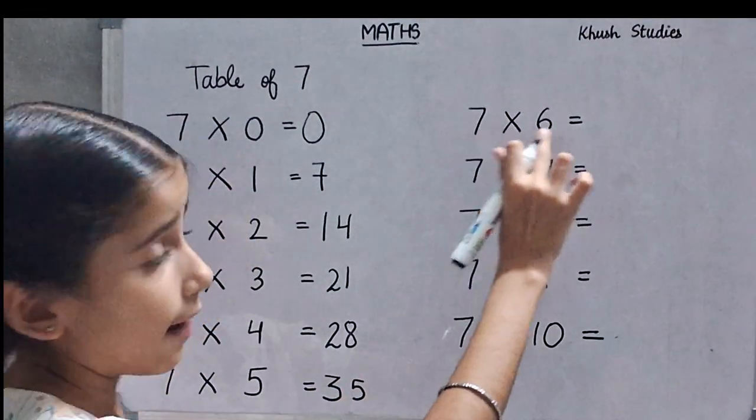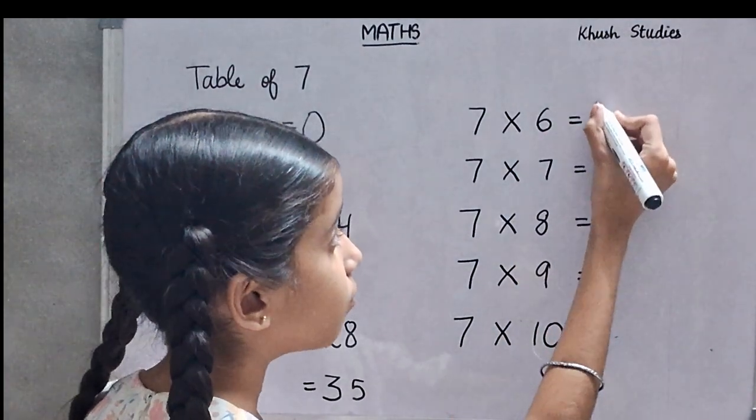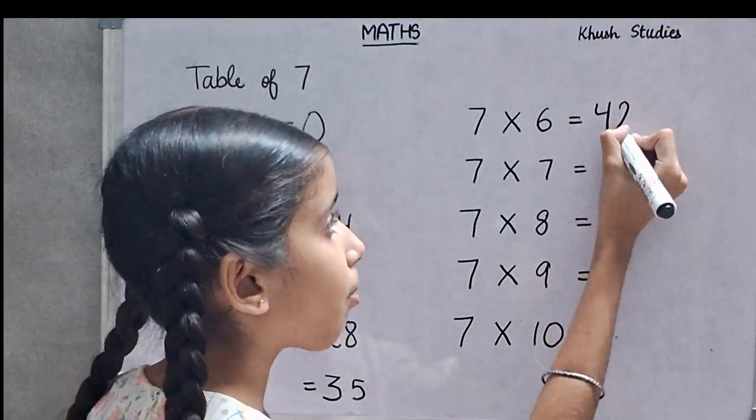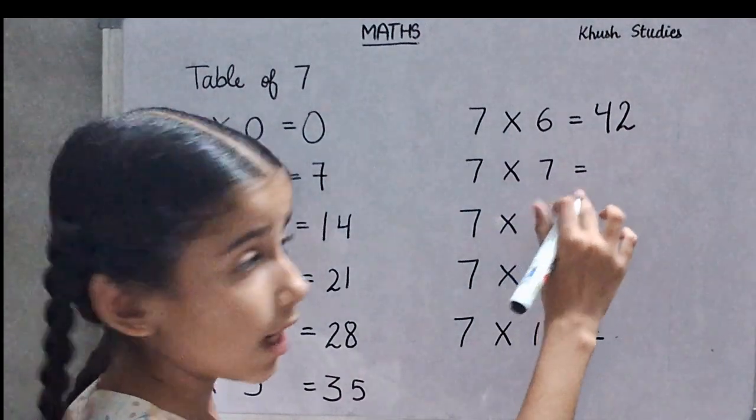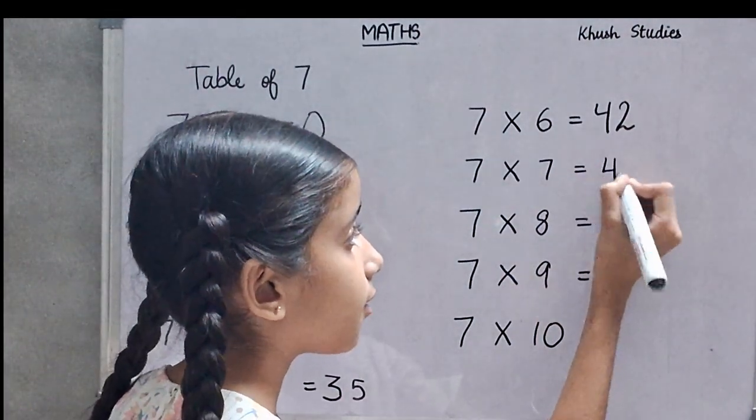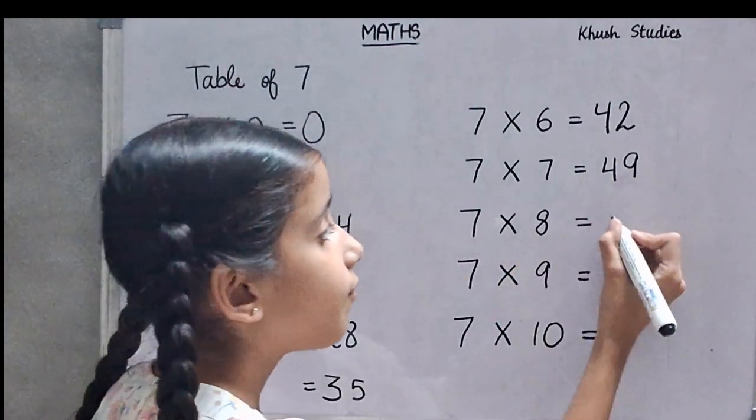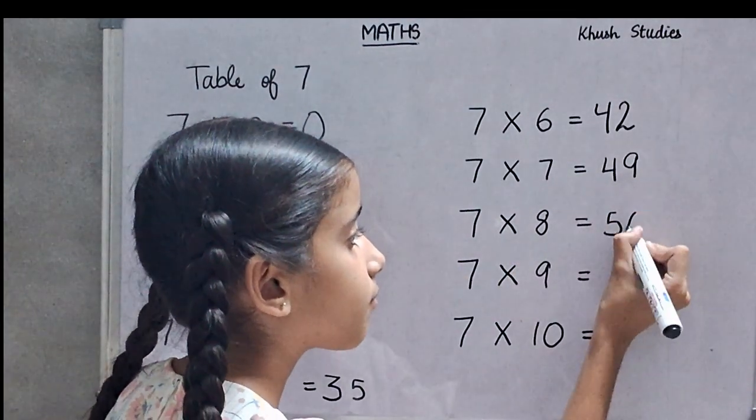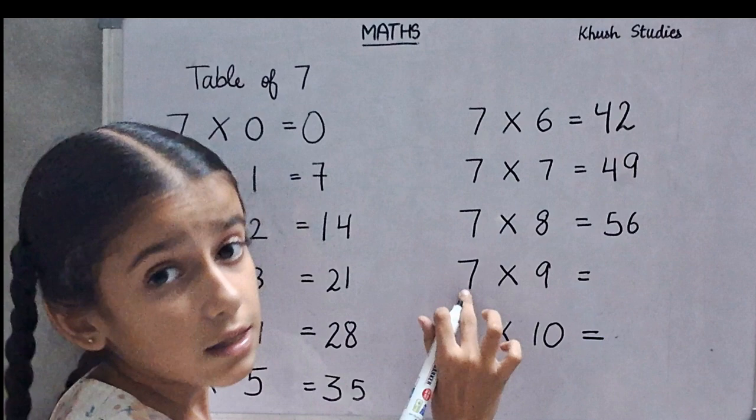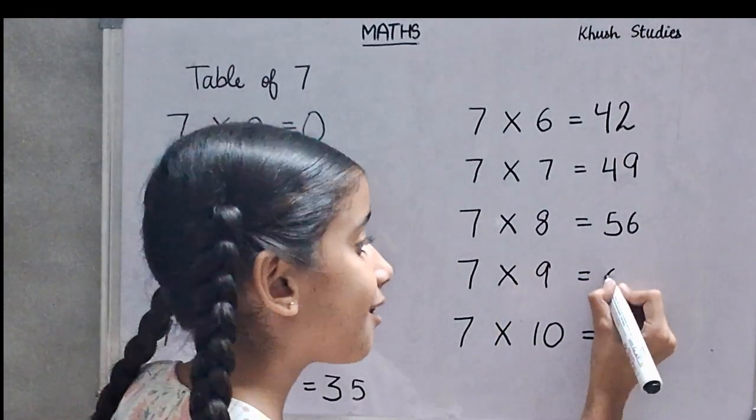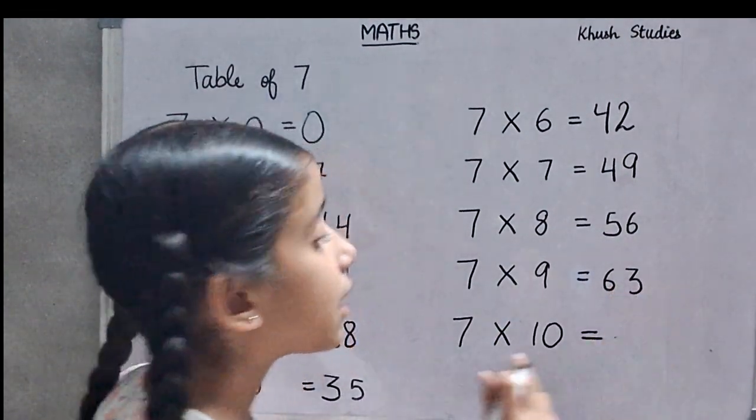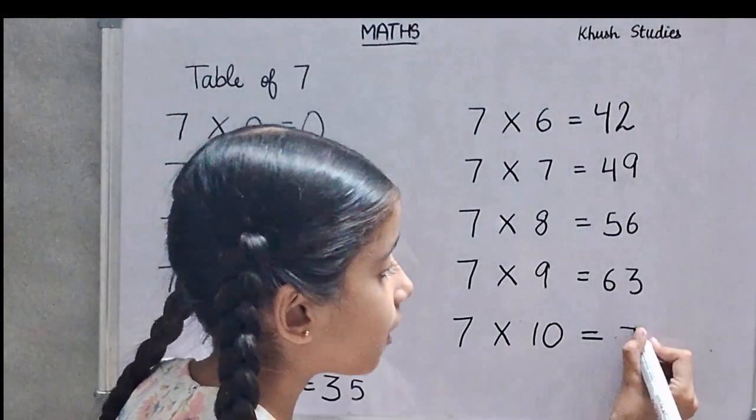7 six are 42. 7 sevens are 49. 7 eights are 56. 7 nines are 63. 7 tens are 70.